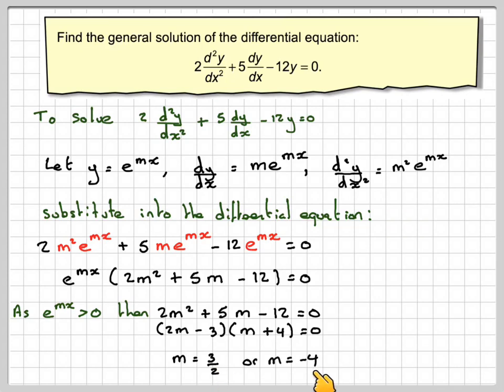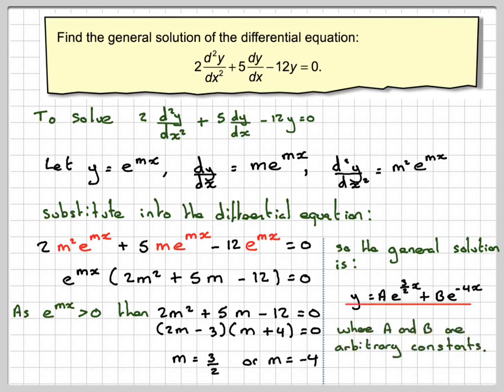And then that is going to give m is 3 over 2, or m is minus 4, and therefore the general solution is going to be of the form y is equal to a e to the 3 over 2x plus b e to the minus 4x, using both values of m, where a and b are what's known as arbitrary constants.